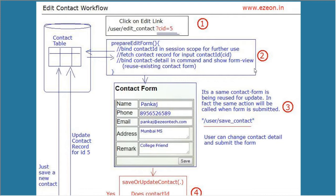So let's have a look at the overall workflow of the edit operation. We'll have one link for edit and when the user clicks that link, a request will be called with this edit contact URL, which will have a contact ID associated here and this record will be edited.